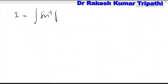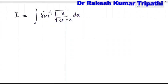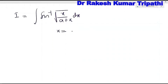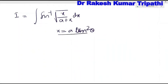We need to find the integration of sin⁻¹(√(x/(a+x))). To integrate this integral I = sin⁻¹(√(x/(a+x))), the most appropriate substitution is x = a·tan²θ.